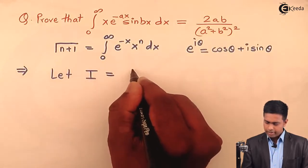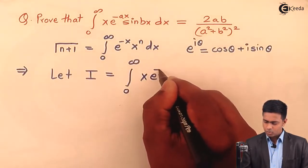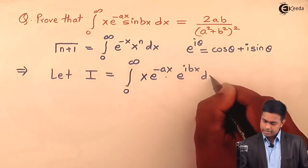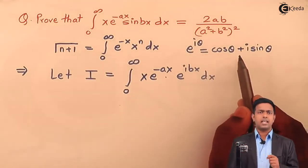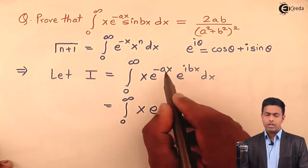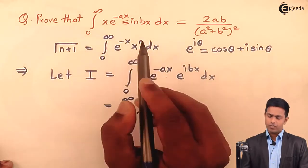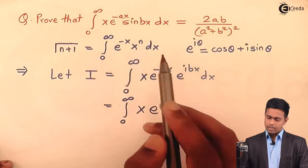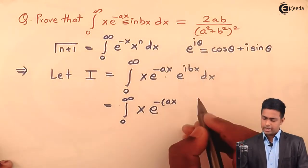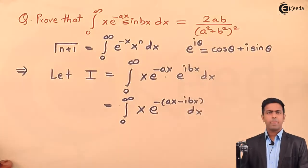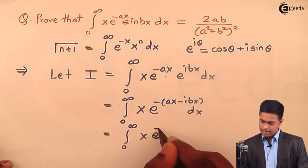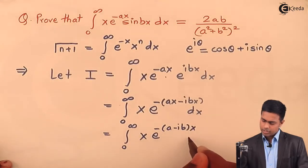Let I equal the integration from 0 to infinity of x times e raised to minus ax times sin(bx) dx, where sin(bx) is replaced by e raised to i*bx. Since e raised to i*bx equals cos(bx) plus i*sin(bx), we can take the exponential terms together. For the gamma function definition we need a negative power of e, so we take the negative sign outside: x times e raised to minus(ax minus i*bx) dx.